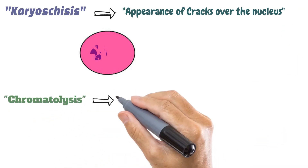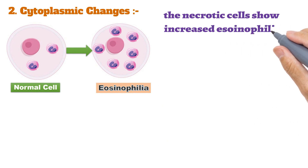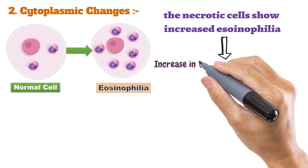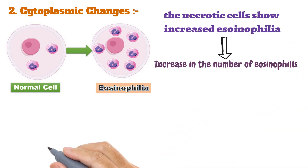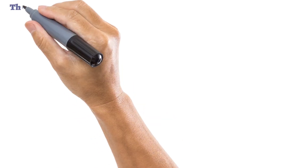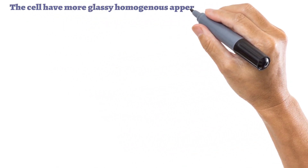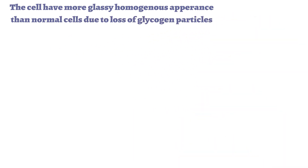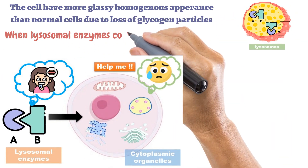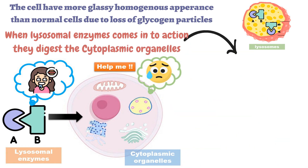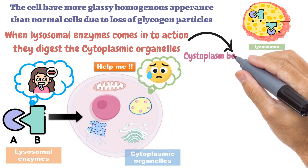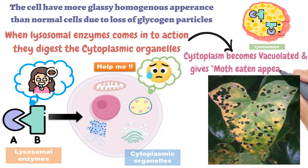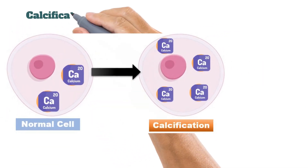The second type is cytoplasmic changes. Necrotic cells show increased eosinophilia, meaning an increase in eosinophilic staining. Cell outlines are absent, and the cells have a more glassy, homogeneous appearance than normal cells due to loss of glycogen particles. When lysosomal enzymes come into action, they digest the cytoplasmic organelles, and the cytoplasm becomes vacuolated, giving a 'more eaten' appearance, as you can see in the picture.